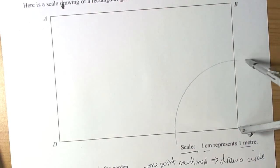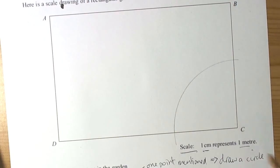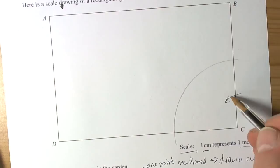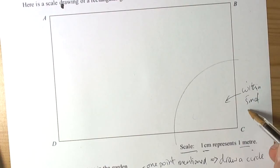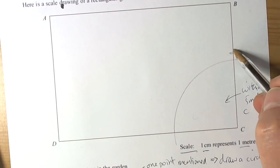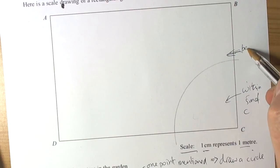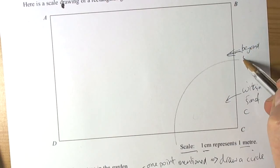We're drawing a circle to show that anything in here is within five metres. Anything in this bit here is within five metres of C. Anything out here is beyond five metres.